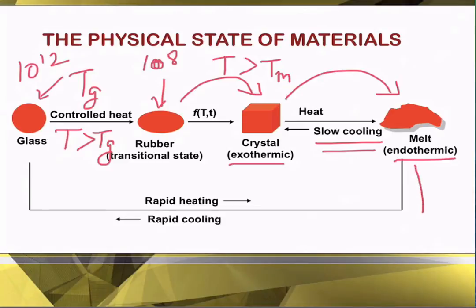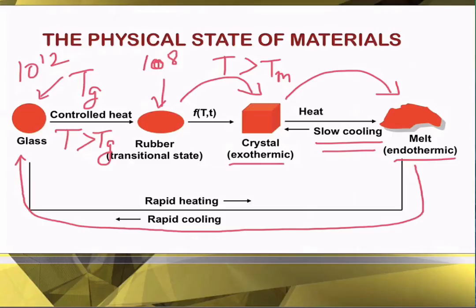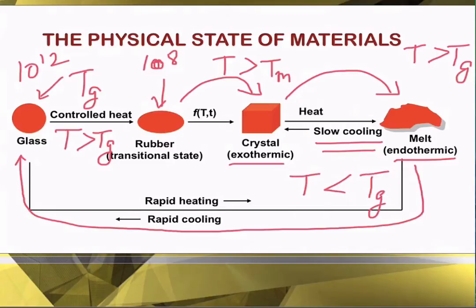However, if we cool the melt down very rapidly, instead of forming crystals, the melt will form a glass — an amorphous glassy material. So in a nutshell, these are the different physical states food can undergo during processing depending on temperature. The critical temperature to understand is the glass transition: raising the temperature above Tg transforms glass to rubbery, while reducing the temperature below Tg transforms the material back into a glassy state.